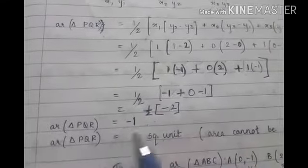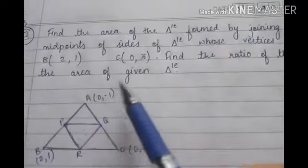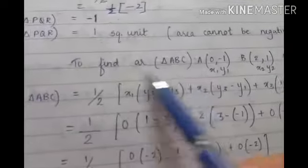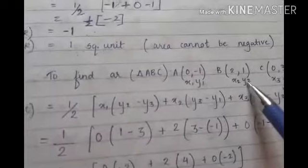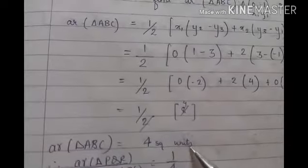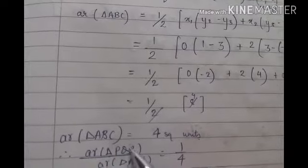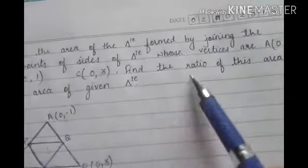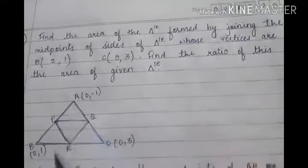So the area of triangle PQR is 1 square unit — that is the first answer. Next, we need to find the ratio of area of PQR to the area of the given triangle ABC. Assign coordinates x1y1, x2y2, x3y3 to A, B, C and use the area formula. The area of triangle ABC comes out to be 4 square units. Therefore, the ratio of area of PQR to area of ABC = 1/4, that is, 1:4. This is the answer to the second part of the question.